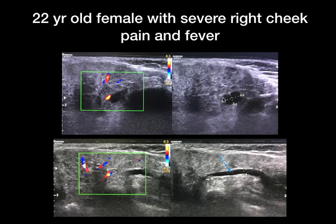You can see a small hypoechoic intraparotid lymph node with loss of fatty hilum, which indicates it is a reactive lymph node.